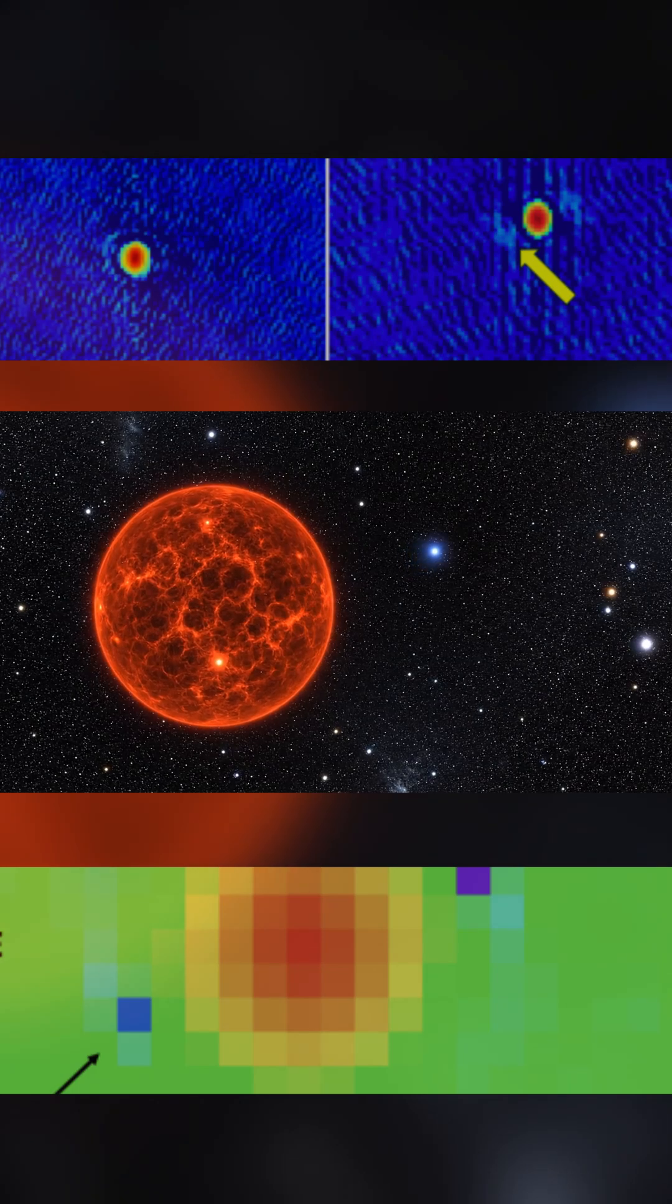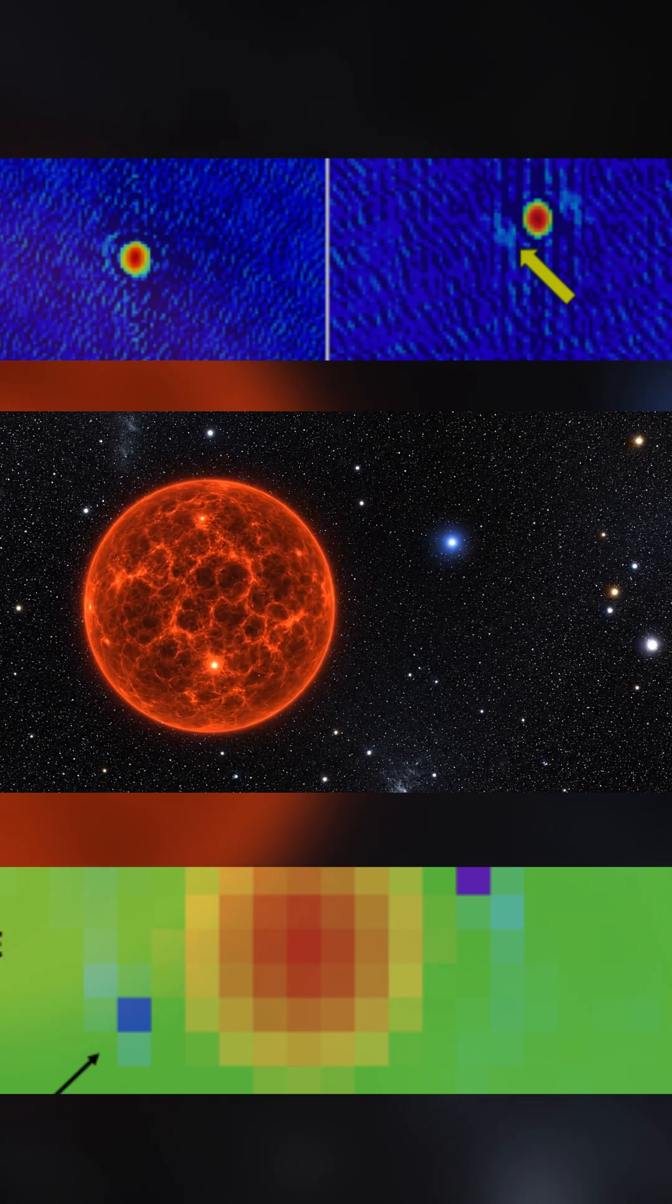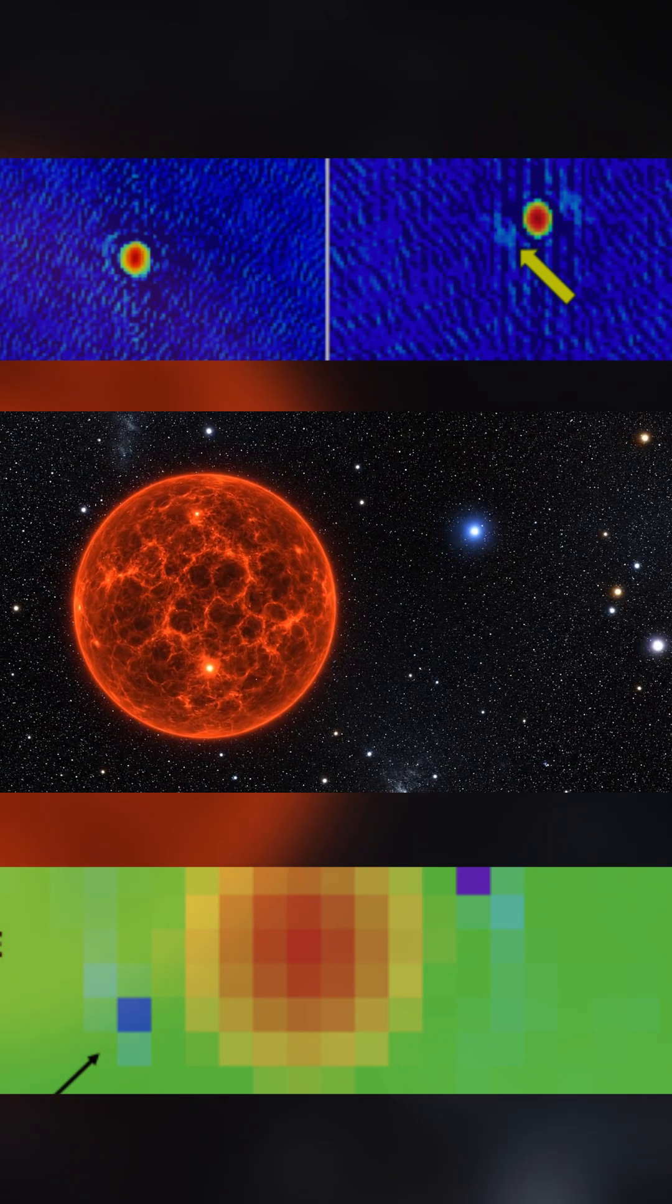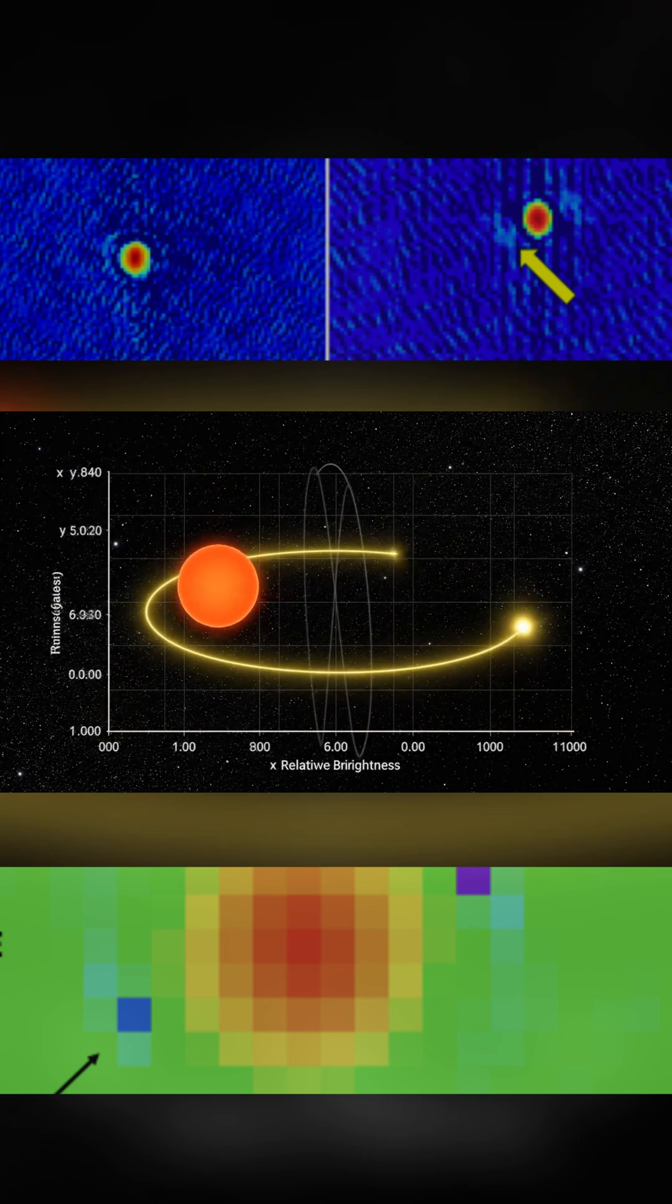Astronomers have finally done it. After more than a hundred years of predictions and speculation, NASA scientists have now directly imaged a hidden companion star orbiting Betelgeuse.